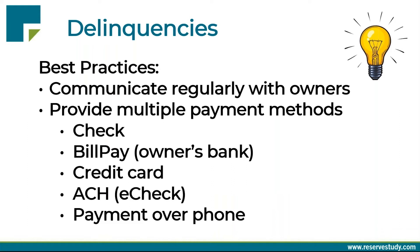For delinquencies, collecting money and keeping delinquencies to a minimum is part of protecting your assets. Communicate regularly with owners — whether via mailed or emailed billing statements and coupons. There's a reason utility companies send out monthly statements with return envelopes: it's more effective at keeping delinquencies down. Also provide multiple payment methods. Give people as many ways to pay as possible — some owners are out of state, have second homes, travel for work, or are in the military abroad.